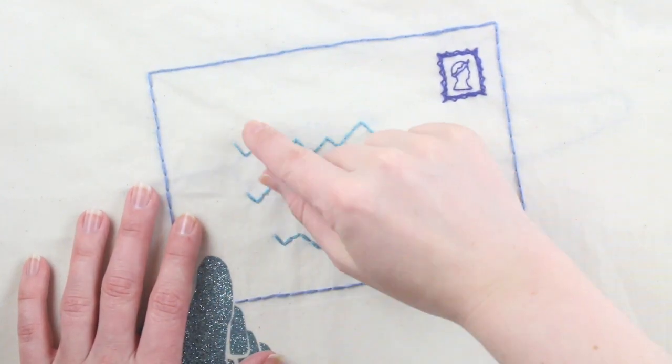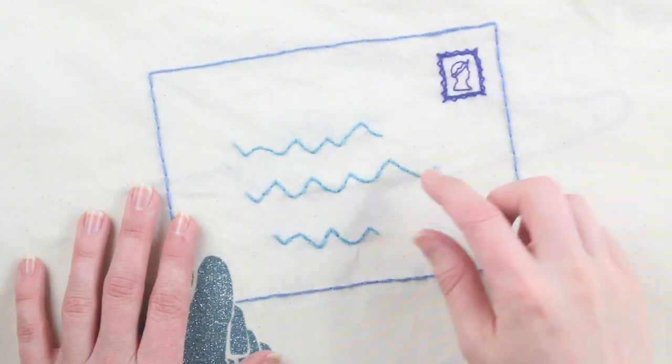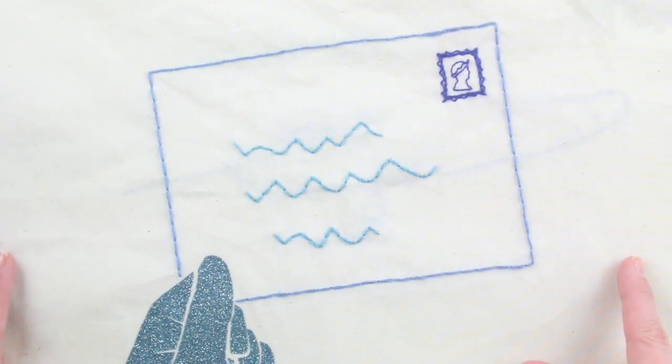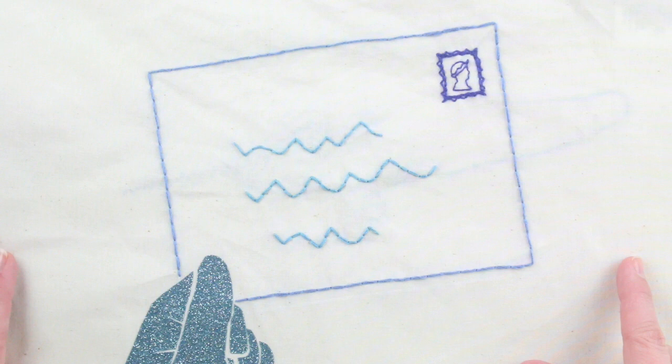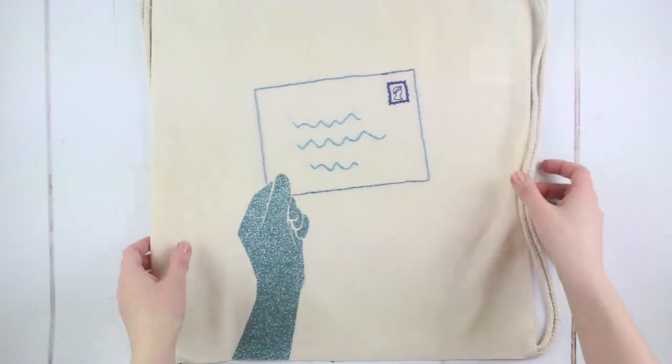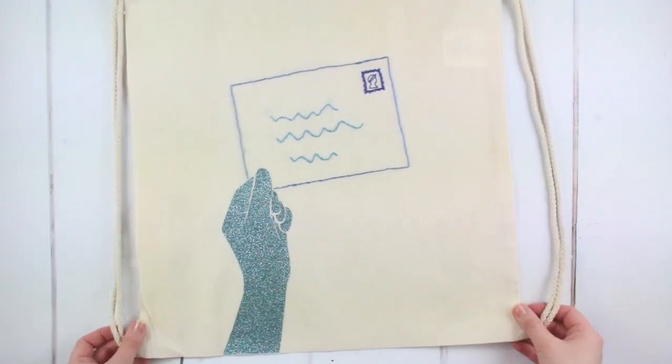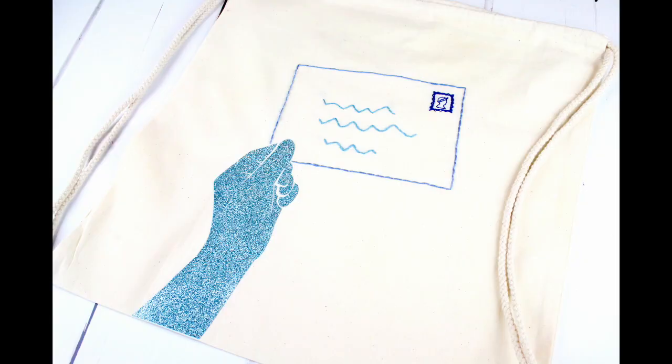For the squiggly writing, use a white pencil to draw on some lines of rough text. Choose another colour of thread and stitch on the text using the full 6 strands of embroidery thread. Give your bag another iron to take out the creases created while sewing. And well done, your bag is complete.